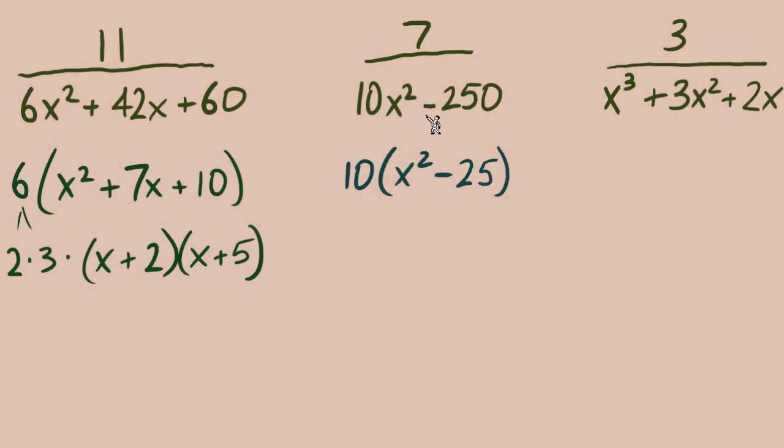The next denominator, there is a GCF, a 10, we can divide out from each of our two terms. It goes out front. The 10 we could break that up into prime factors, 2 times 5. How about x squared minus 25? Can we factor this further? Yep, definitely, that's a difference of squares, x plus 5 times x minus 5. There is our second denominator completely factored.